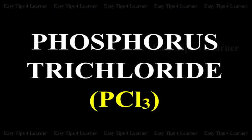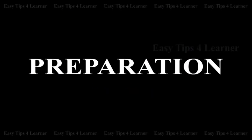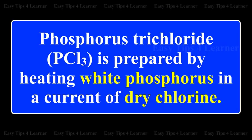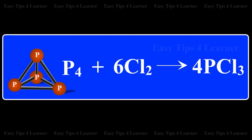Phosphorus trichloride PCL3 Preparation. Phosphorus trichloride is prepared by heating white phosphorus in a current of dry chlorine. Phosphorus plus chlorine gives phosphorus trichloride.